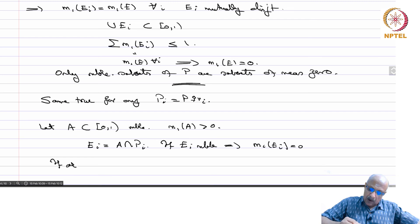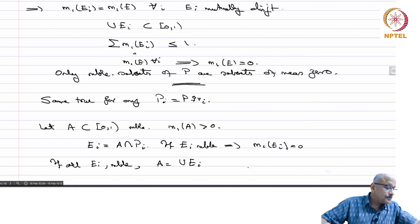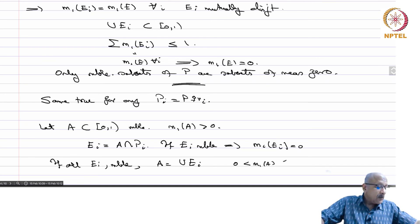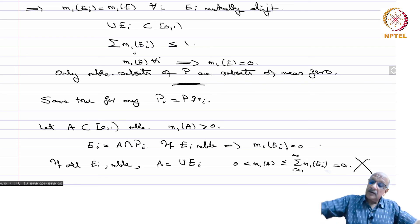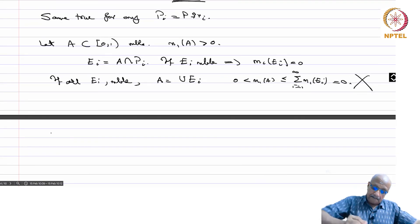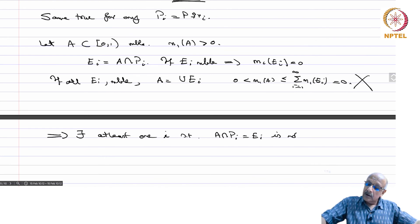So if all E_i are measurable, then A equals the union of E_i, and therefore 0 < m1 of A is less than or equal to the sum of m1 of E_i = 0, which is a contradiction. Therefore there exists at least one i such that A intersection P_i is not measurable.